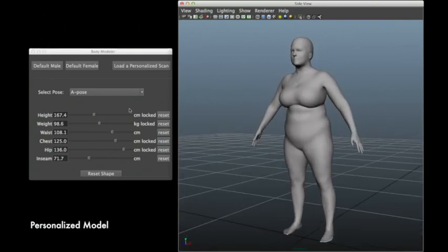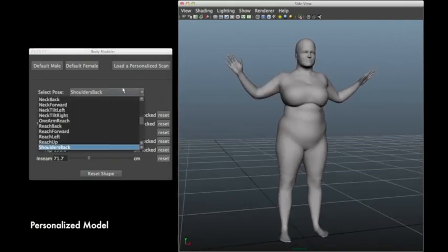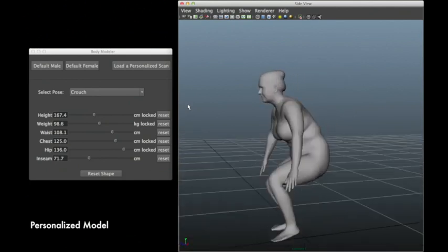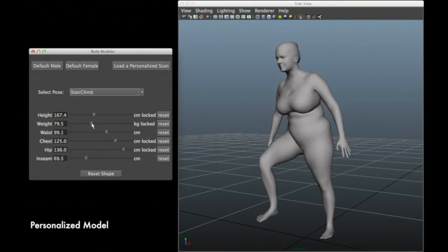We can also vary the pose of the body. Here we select from a set of poses we commonly use in scanning. Note that this person was only scanned in a single pose. Even with widely different body shapes, we get natural looking deformations of the body.